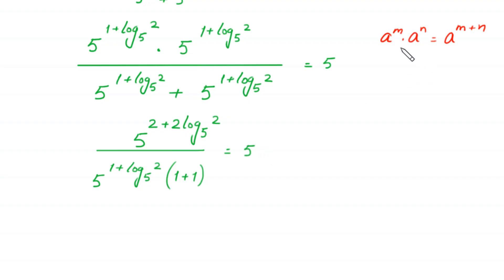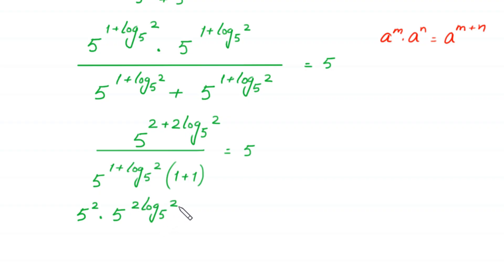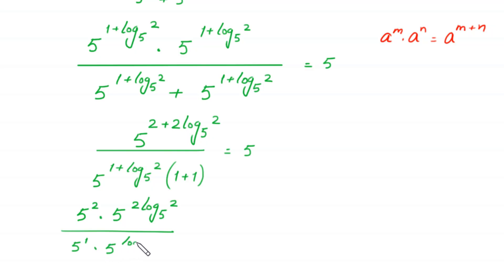According to the property of exponents, we write 5 to the power (2 plus 2 times log base 5 of 2) over 5 to the power (1 plus log base 5 of 2), times 2, equal to 5. We can split the numerator as 5 to the power 1 times 5 to the power (1 plus log base 5 of 2) times 5 to the power log base 5 of 2, and the bracket gives 2, equal to 5.